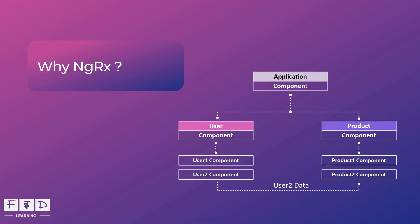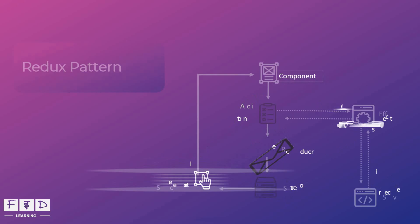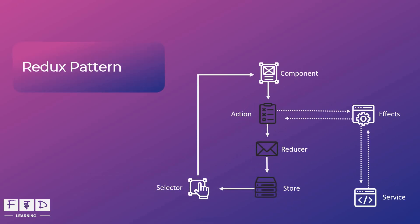So this is how you can explain the need for NGRX. Now let's understand the principles of Redux. Redux is an open-source JavaScript library for managing application state, based on three main principles. First, single source of truth called store — the state of the entire application is stored in a single object. Second, state is read-only, meaning the state cannot be changed directly; instead, actions are dispatched to trigger changes. And third, changes are made with a function called reducer — reducers are pure functions that take the current state and an action and return a new state.